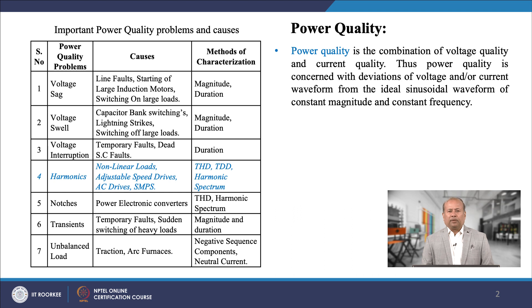From the table, voltage sag, swell, and interruption — that is serial numbers 1 to 3 — are voltage-related power quality problems. Whereas harmonics, notches, transients, and unbalanced loads — that is serial numbers 4 to 7 — are current-related power quality problems.